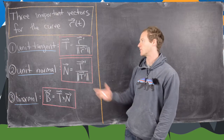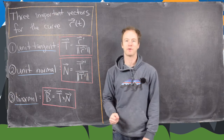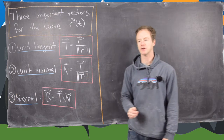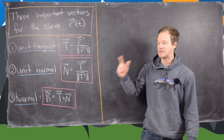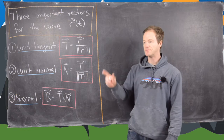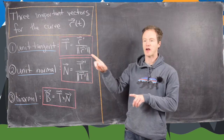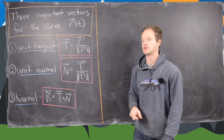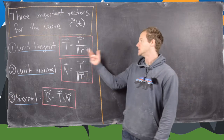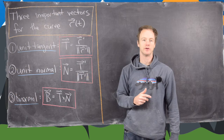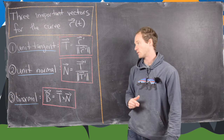We've used this one before. You might ask why we really want a unit vector. When you're thinking about a tangent, often all you want is the direction of the vector and not the magnitude. So turning it into a unit vector makes it nice and easy to work with.